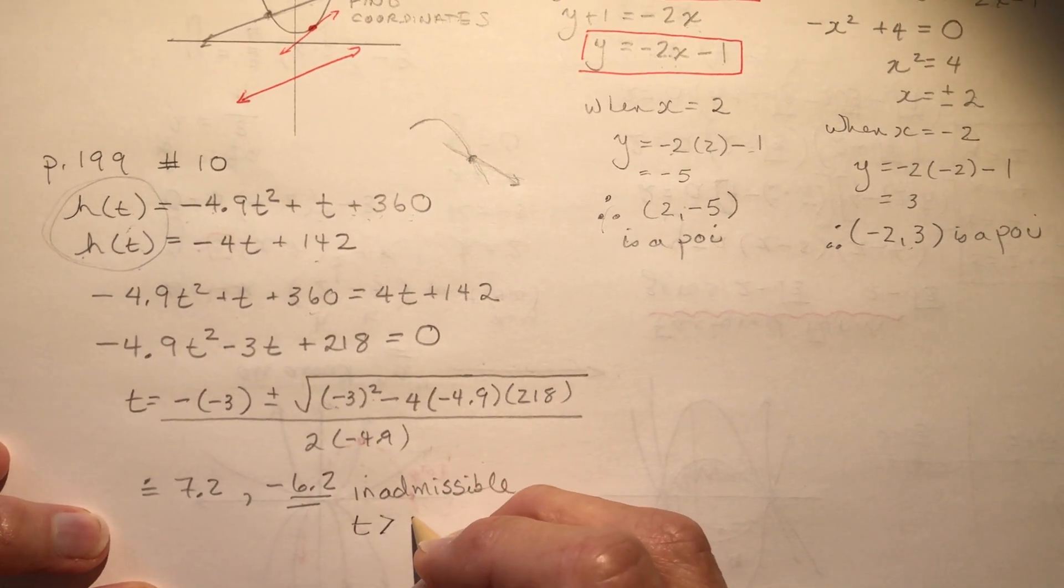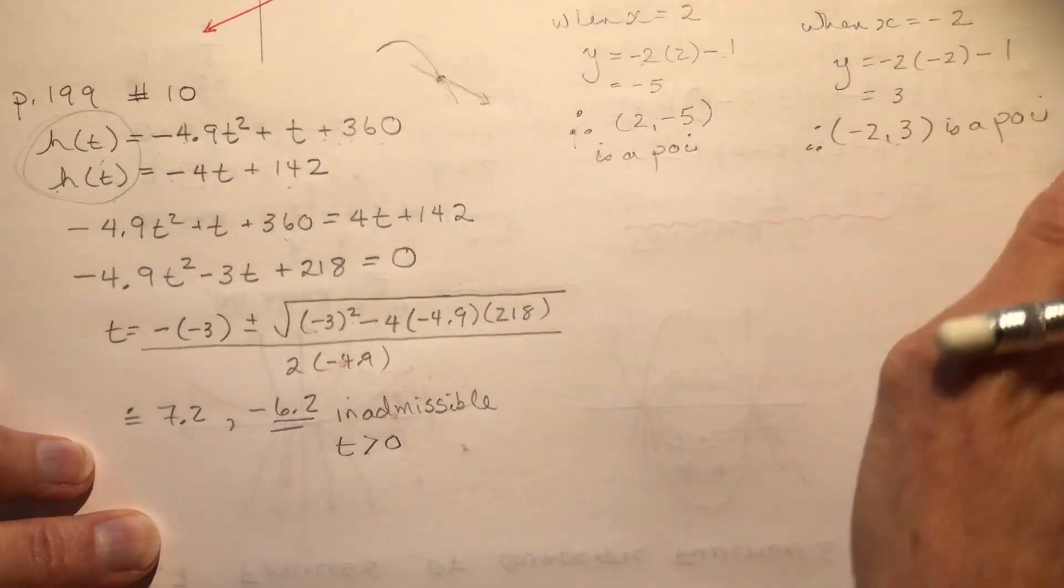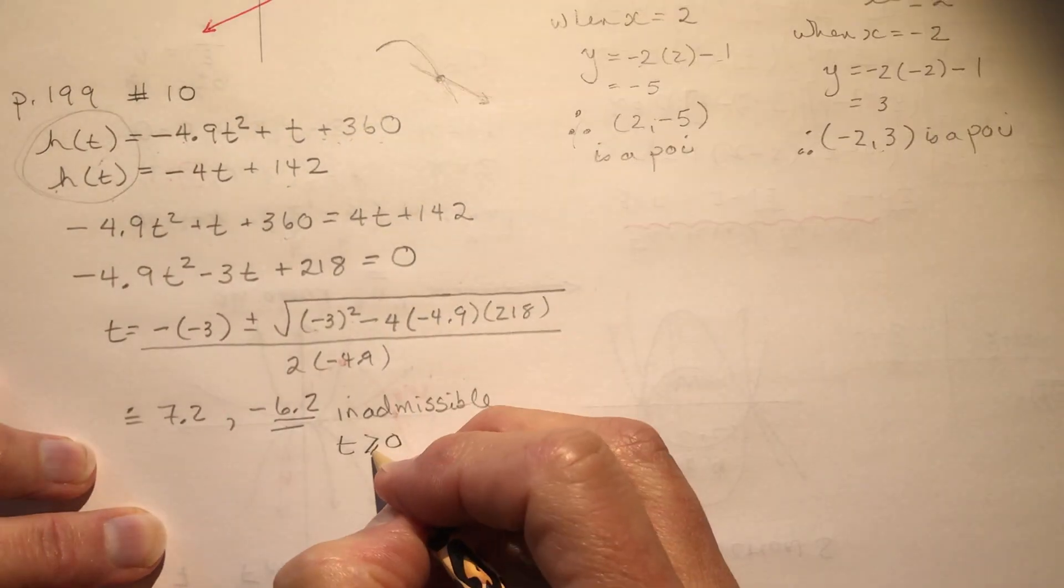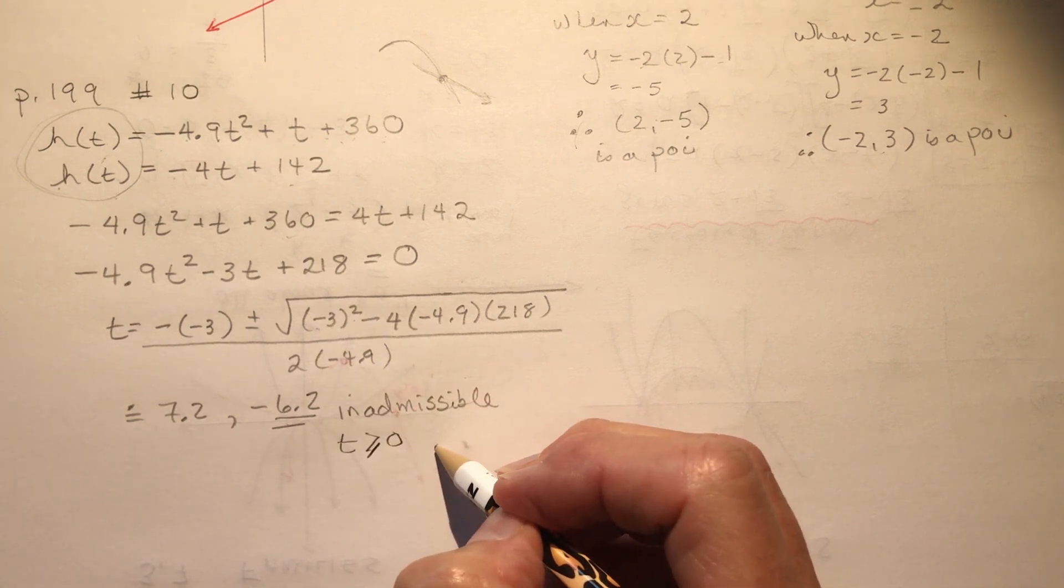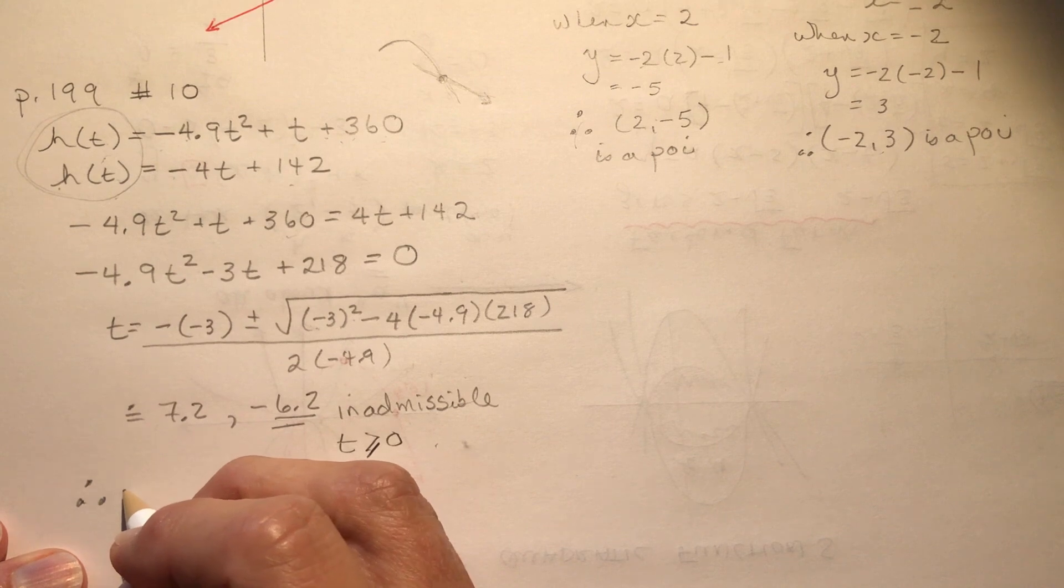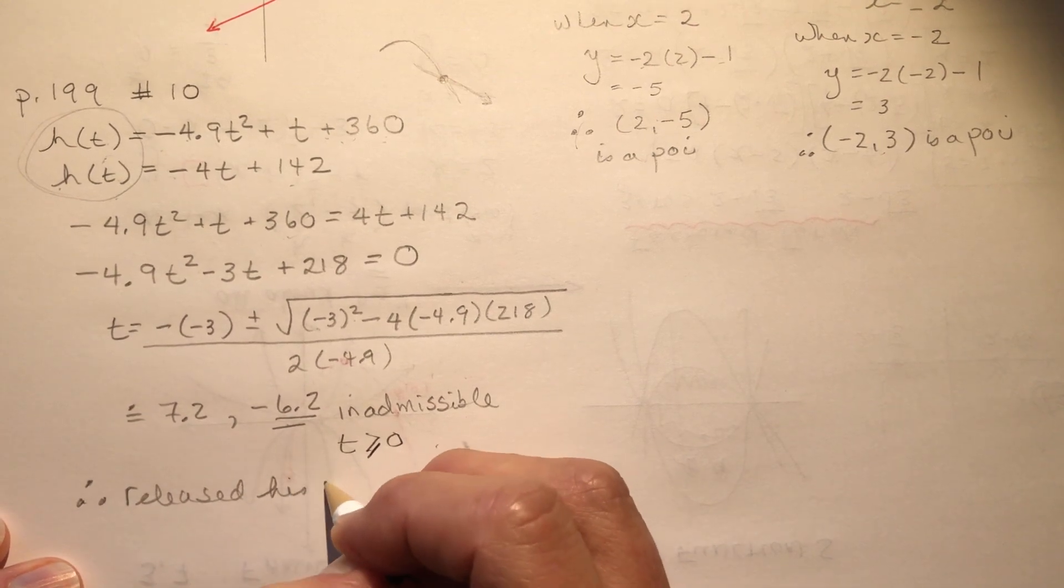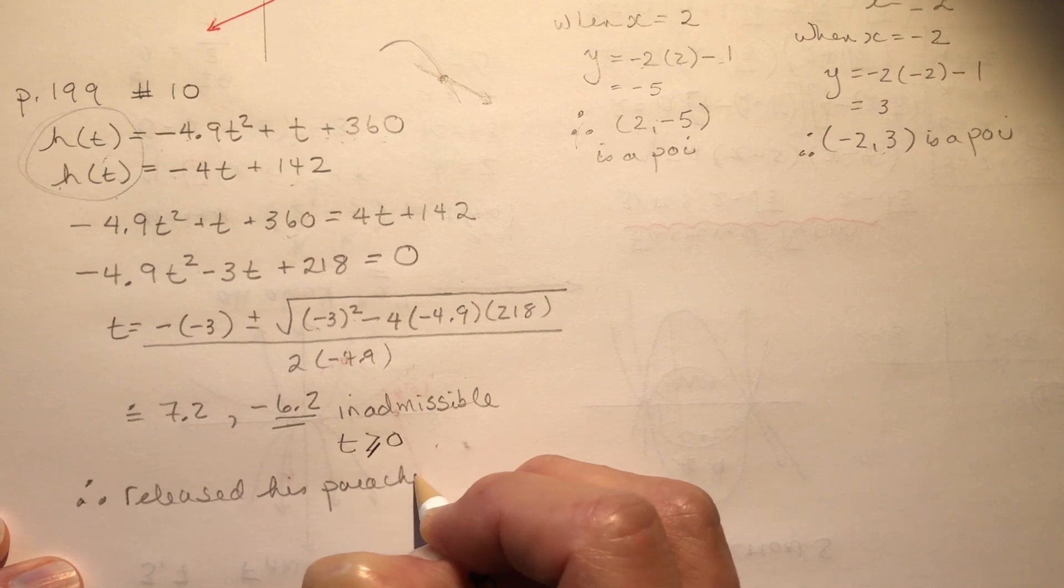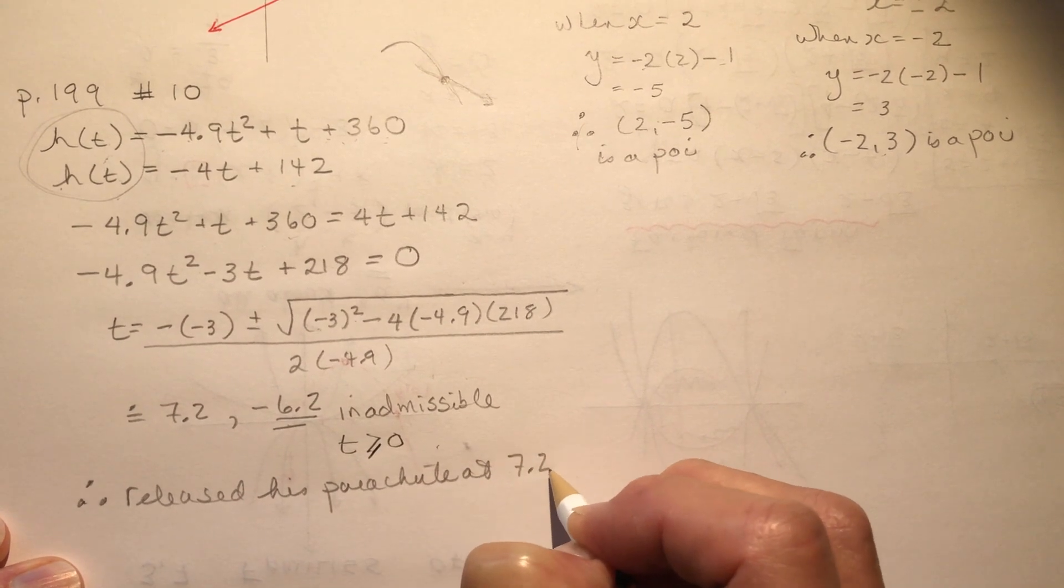In the context of the word problem, because time is never negative. So time has to be greater than 0 or equal to. Let me just move this up a bit. Okay, so time has to be greater than or equal to 0. So that makes this an inadmissible solution. And he pulled the parachute cord, I guess that's what you call it, released, it says he released his parachute at 7.2 seconds.